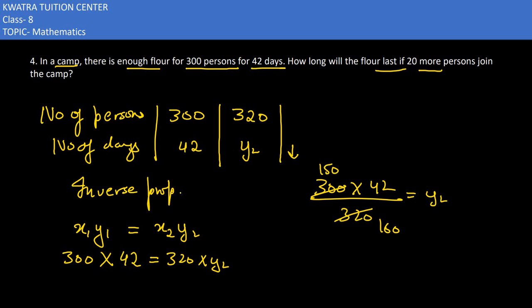To simplify: half of 320 is 160, half of 300 is 150, half of 160 is 80, half of 150 is 75. Dividing by 75 and then by 80, we can further reduce: 16 and 42 can be reduced — 42 becomes 21 and 16 becomes 8.